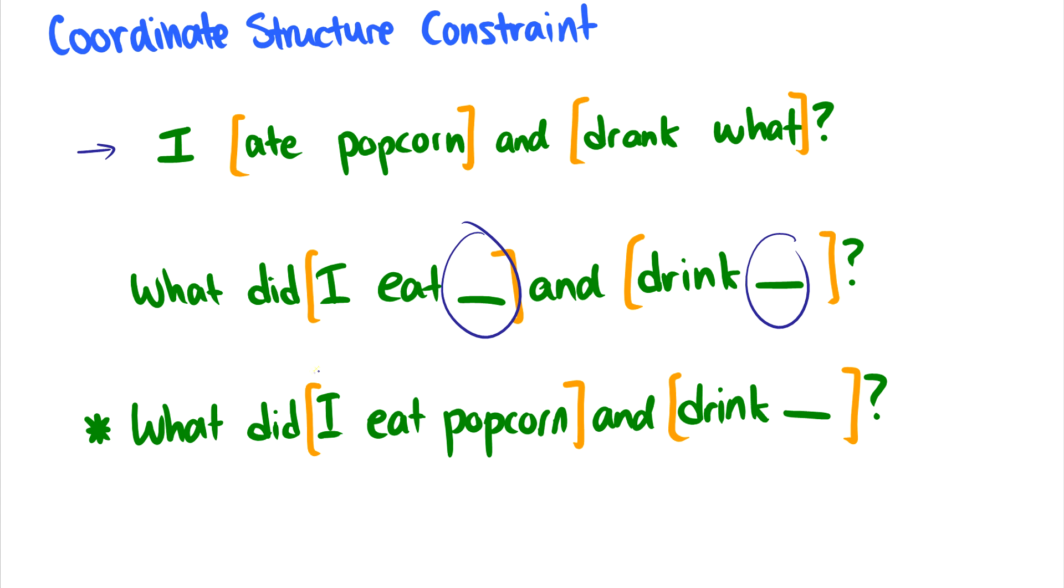So why is this? Well, this is a coordinating structure. So this whole thing is a VP, and inside each VP we have another VP which is coordinated with and. So when we turn this into a wh-word, if we're going to extract the objects from both, or if we're going to extract the object at all, we have to extract the objects from both. So we have to remove the popcorn and whatever they drank, turn them into wh-words, and move them both out. We cannot just move one of them out, otherwise we get something that sounds ungrammatical: What did I eat popcorn and drink? That's not okay because we're expecting that what to be the object of both of these VPs that are coordinated together.